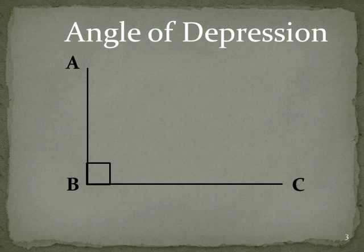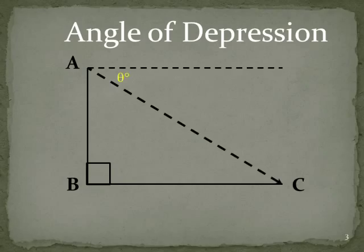Now we're going to be looking at the angles of depression. Angle of depression is from the horizontal looking down from A towards C. One of the biggest problems we find with students is they will frequently put it between the line from A looking down towards C and the line AB.